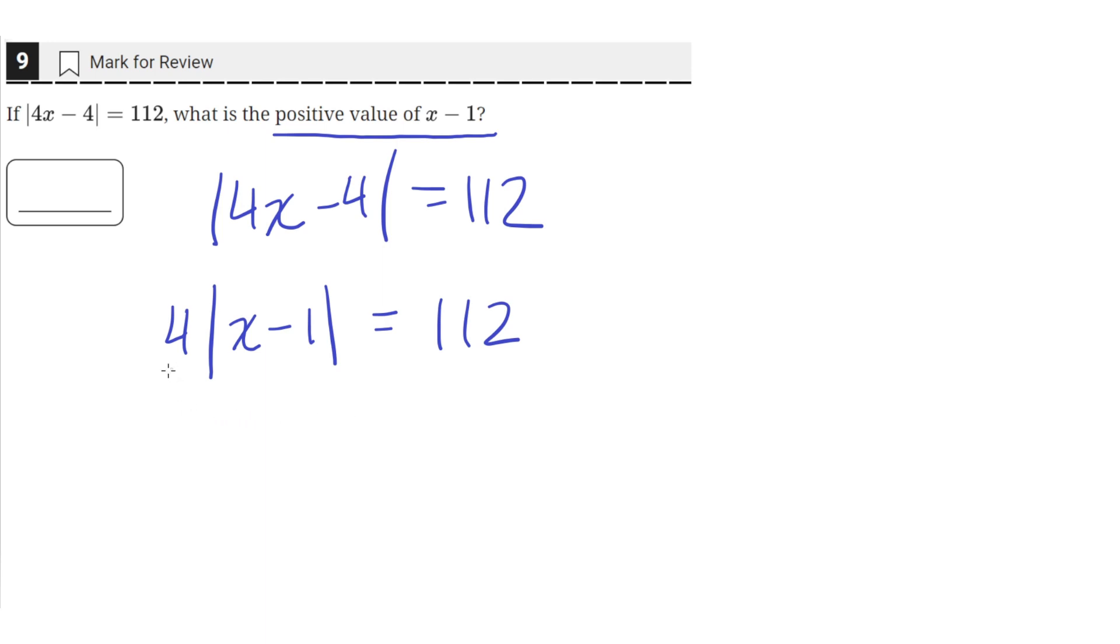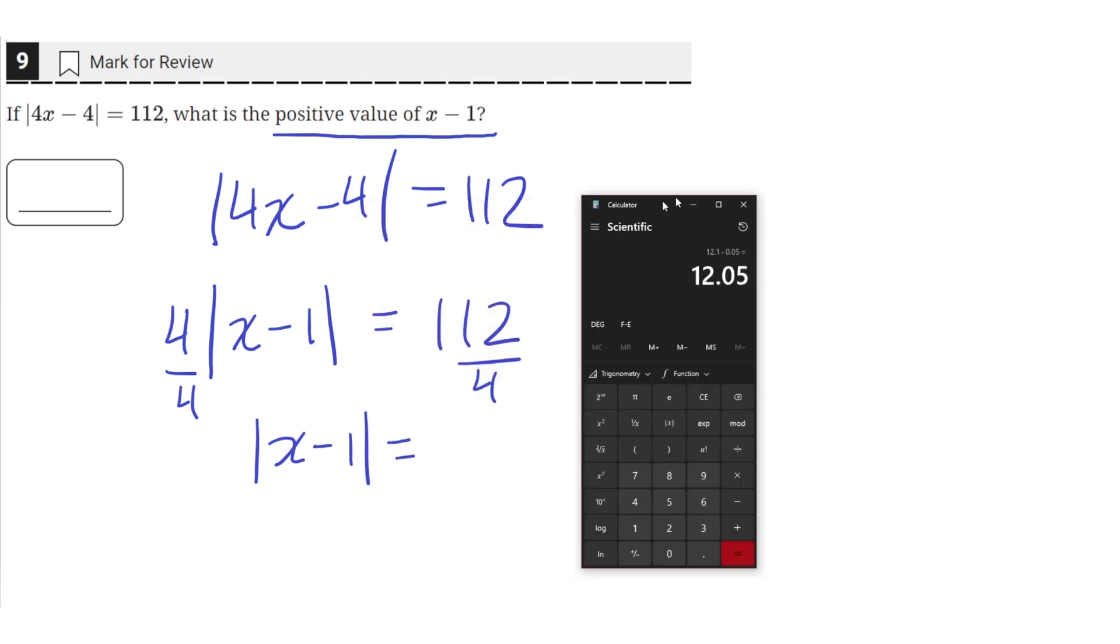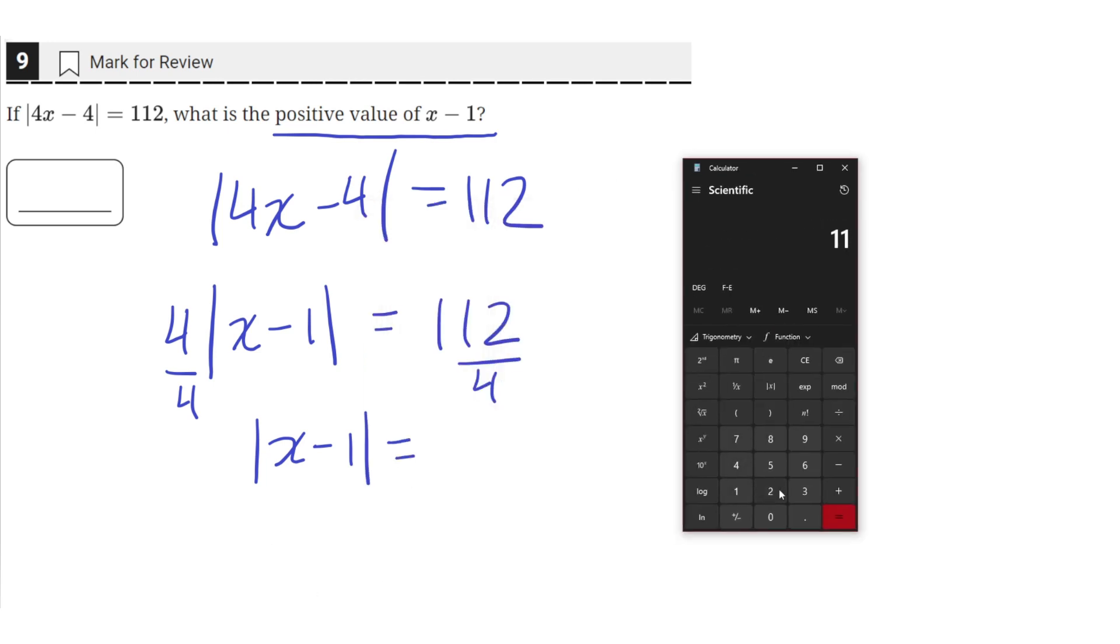Then we can divide both sides by 4 to isolate the x minus 1 term. So the absolute value of x minus 1, 4 over 4 just cancels out to 1, and then on the right side we'll have 112 divided by 4. So 112 divided by 4 is equal to 28.